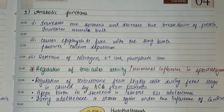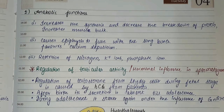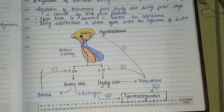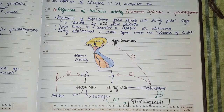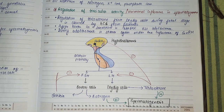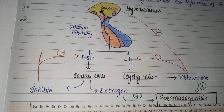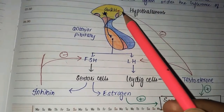Now we study the regulation of testicular activity — often asked as 'describe the hormonal influence on spermatogenesis' or 'regulation of testicular activity,' possibly as a short note. A schematic diagram is helpful here to fetch more marks. During the fetal stage, testosterone secretion from Leydig cells is caused by hCG from the placenta. After birth, secretion is absent until adolescence, when it restarts under the influence of GnRH from the hypothalamus. GnRH is a neuronal hormone that passes to the anterior pituitary.